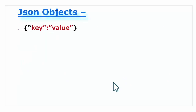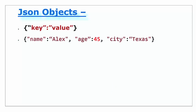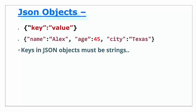JSON objects are a list of key-value pairs — key, colon, value — enclosed within curly brackets. Here is an example. We can input multiple key-value pairs, but keys must be strings and values can have different data types. Like here, name and city are strings, but values could be string, number, and other data types.